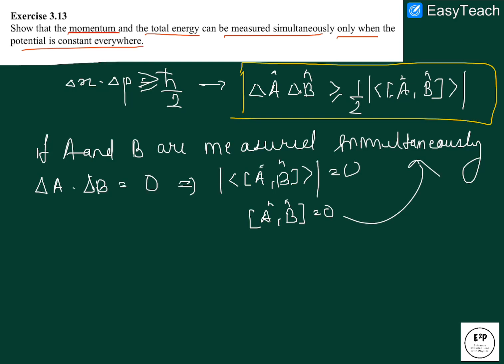We are asked to show that momentum and total energy can be measured simultaneously. So we have to show that momentum operator p and Hamiltonian H, that is total energy, should be equal to zero.